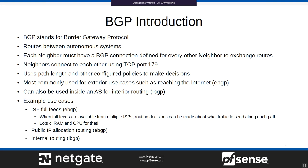BGP neighbors connect to each other using TCP port 179, so it's very easy to accommodate in firewall rules — just allow TCP from your neighbor's address to port 179. It uses path length and other configured policies to make routing decisions. BGP is most commonly used for exterior use cases, such as reaching the internet or connecting your AS to your ISP.